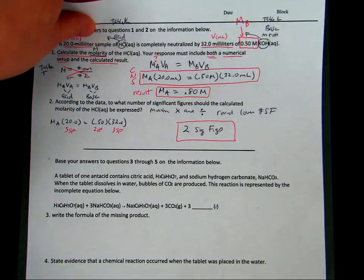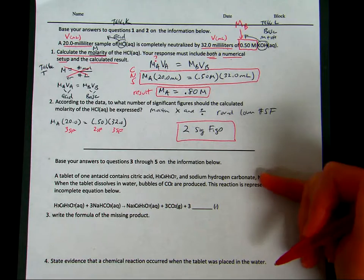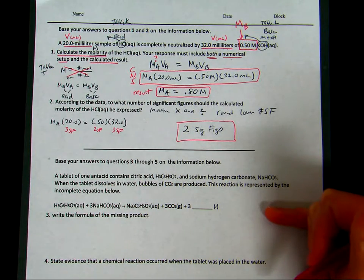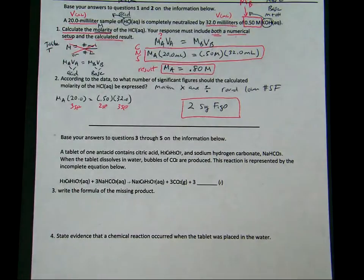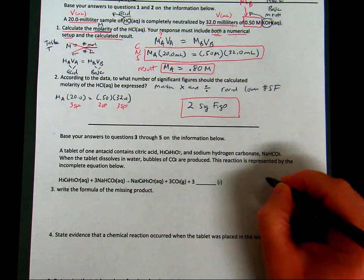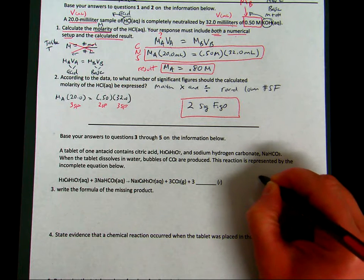Now, questions 3 through 5 are based on the information given in this paragraph. Now, question 3, write the formula of the missing product. This is just a variation of balancing a reaction. So if you can't figure it out, here's a little technique that we use with balancing the equation. So I make like this little sport card.